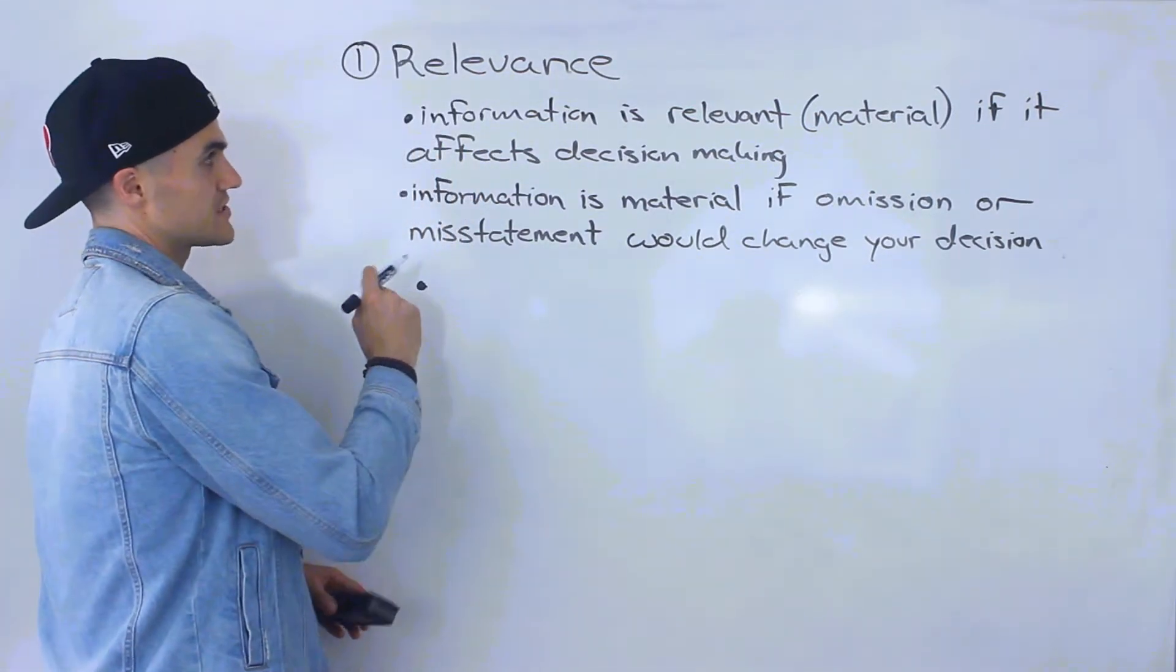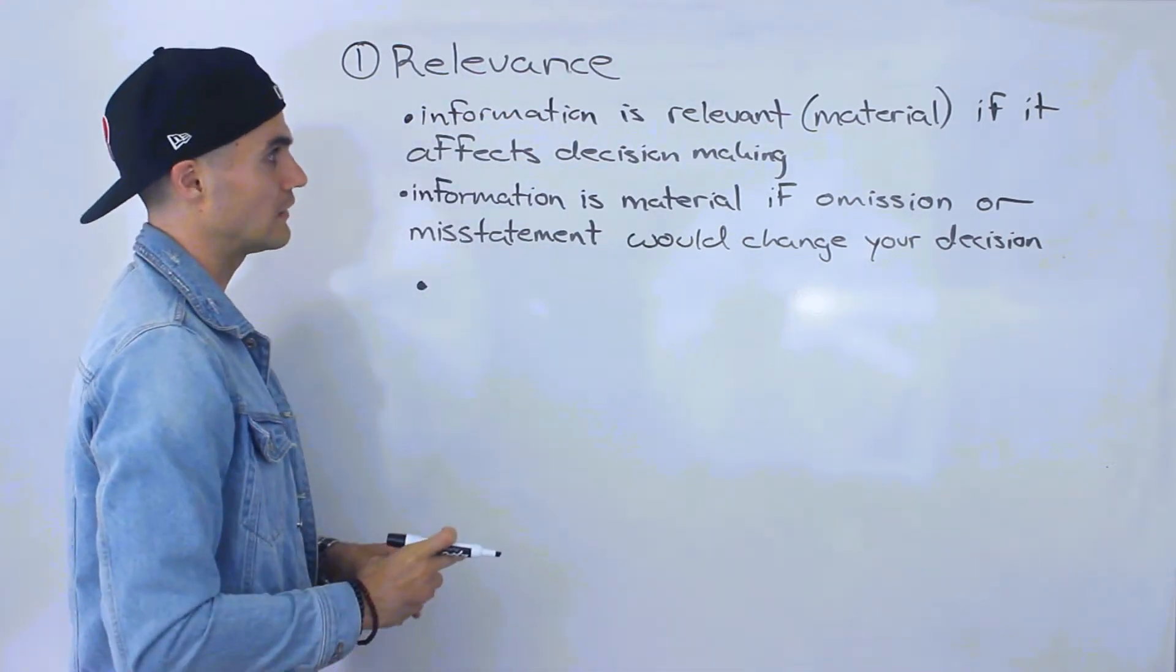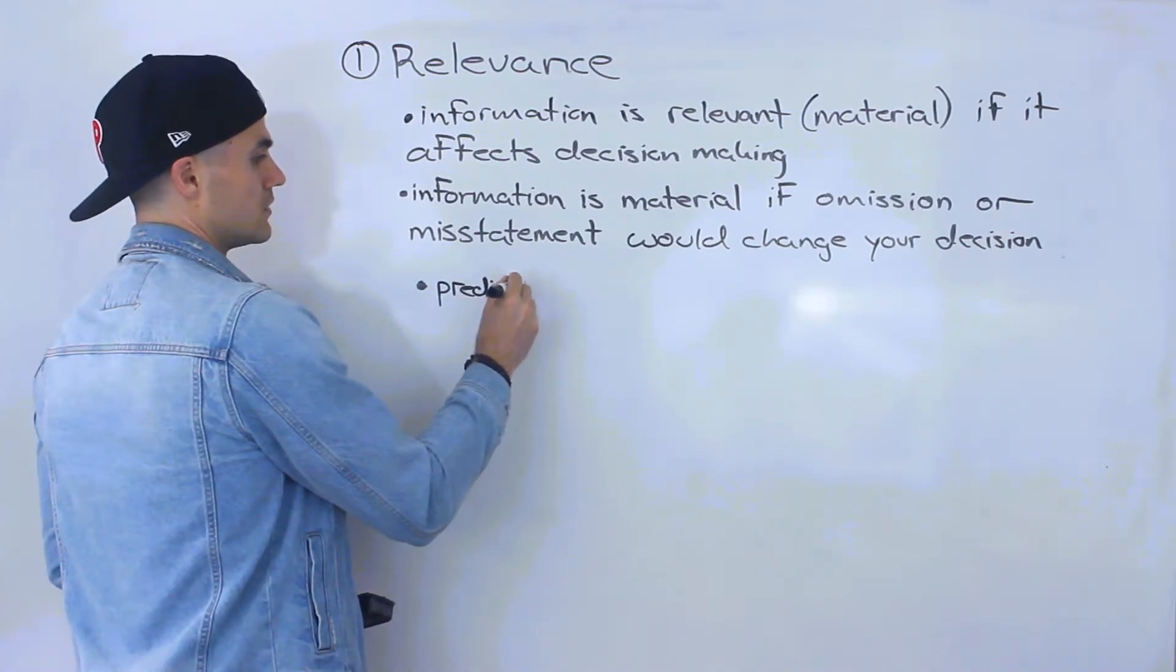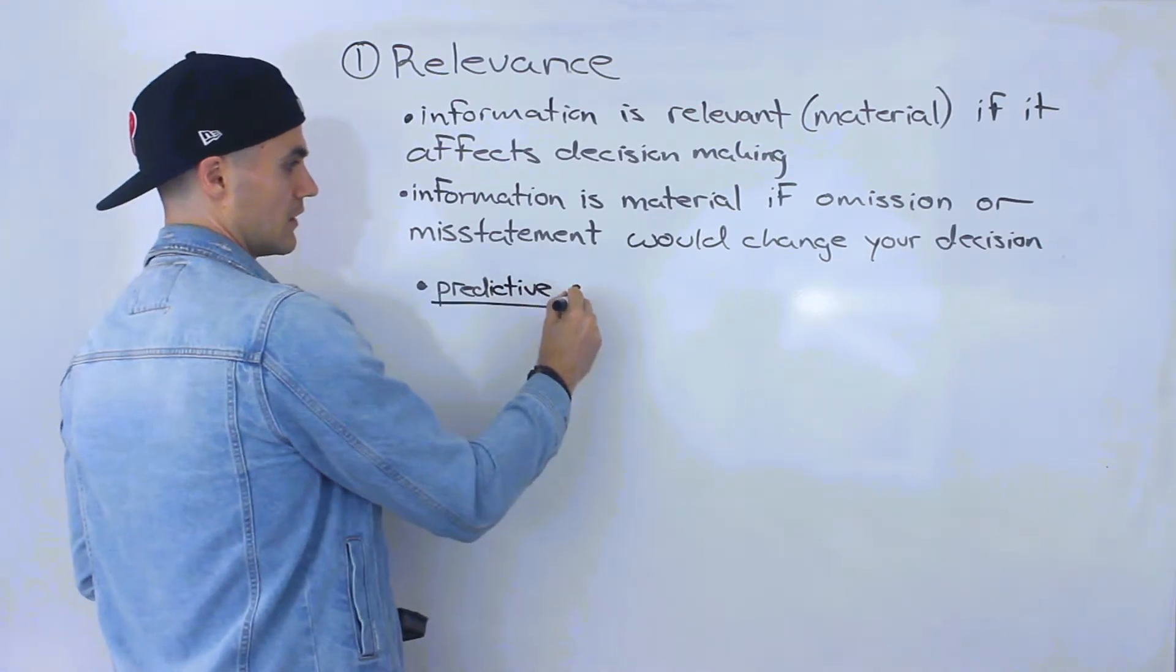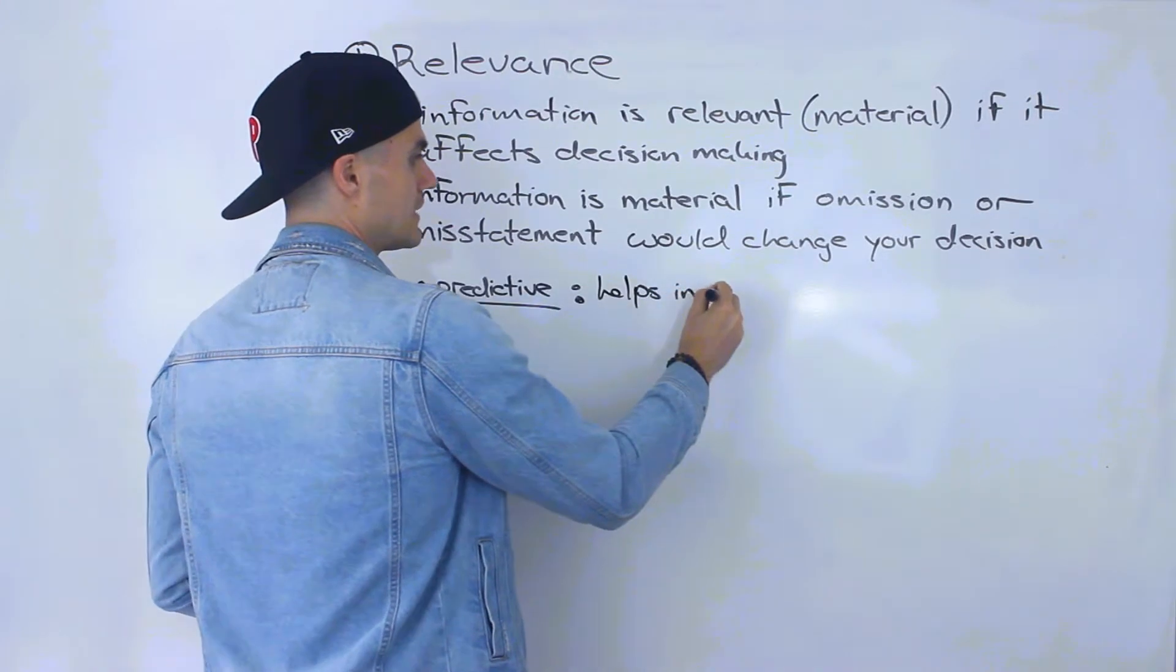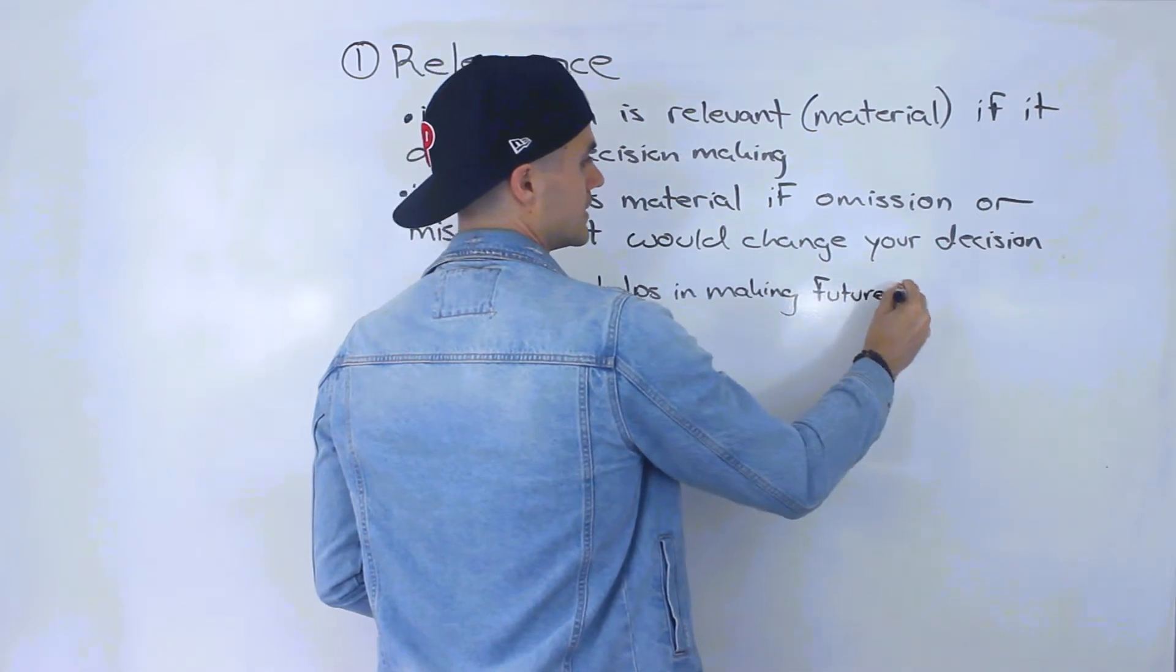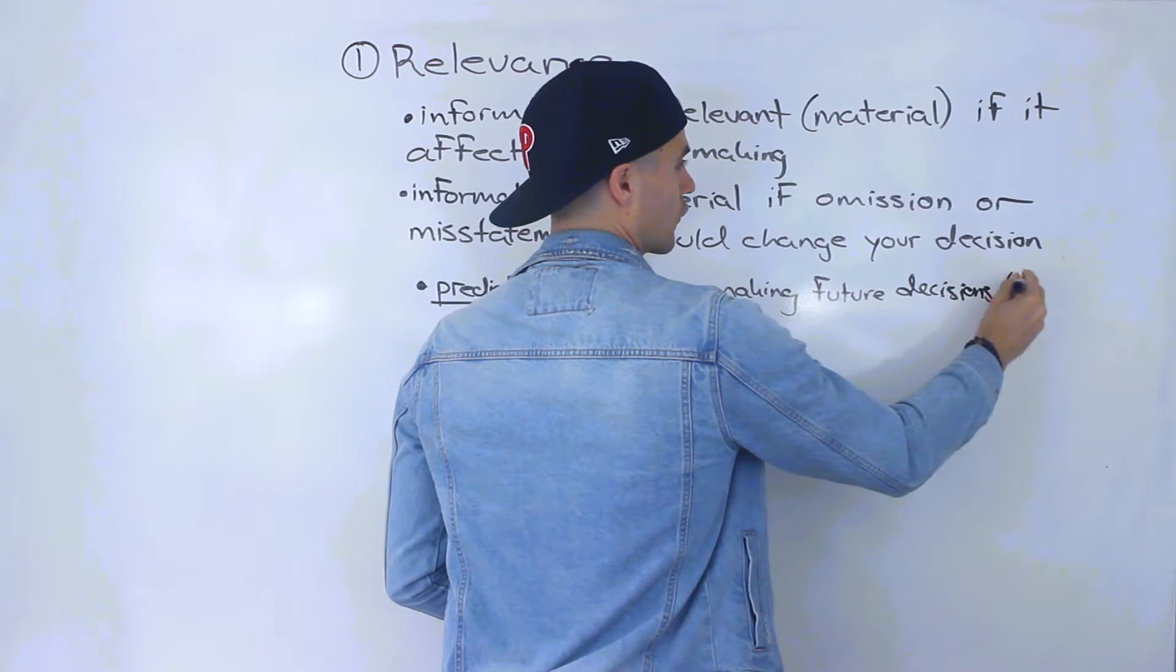And there's two sub-qualities under this quality of relevance that you'll see come up. Number one, the information should be predictive. What that means is that it helps in making future decisions or forecasts.